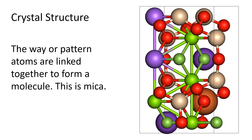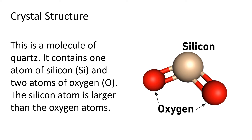This is a molecule of quartz. It contains one atom of silicon and two atoms of oxygen. The silicon atom is larger than the oxygen atoms. The links between the silicon atom and the oxygen atoms are drawn as two lines to indicate there is a very strong bond between the atoms.